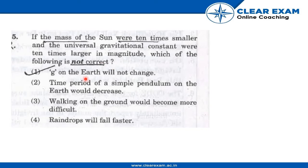Now, the first option is small g on the earth will not change. The time period of a simple pendulum on the earth would decrease. This is the second option. Third option, walking on the ground would become more difficult. Fourth option, raindrops will fall faster.